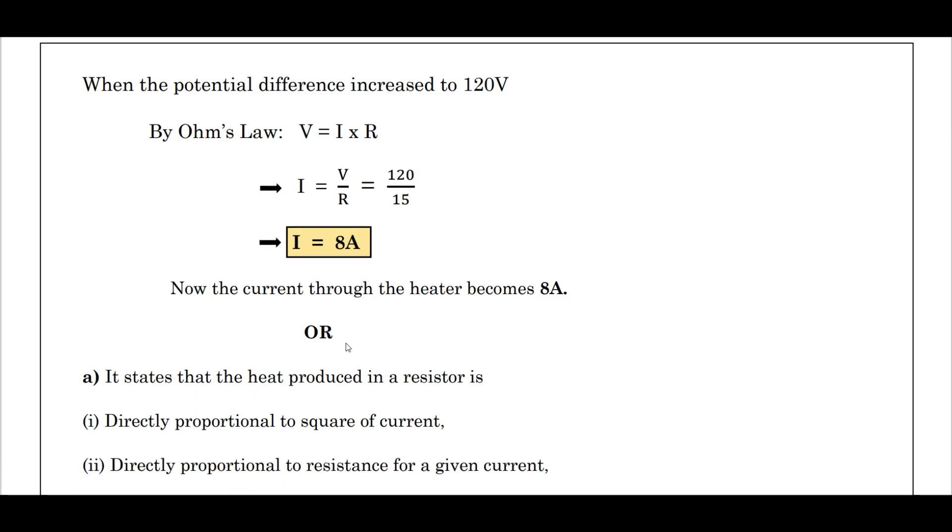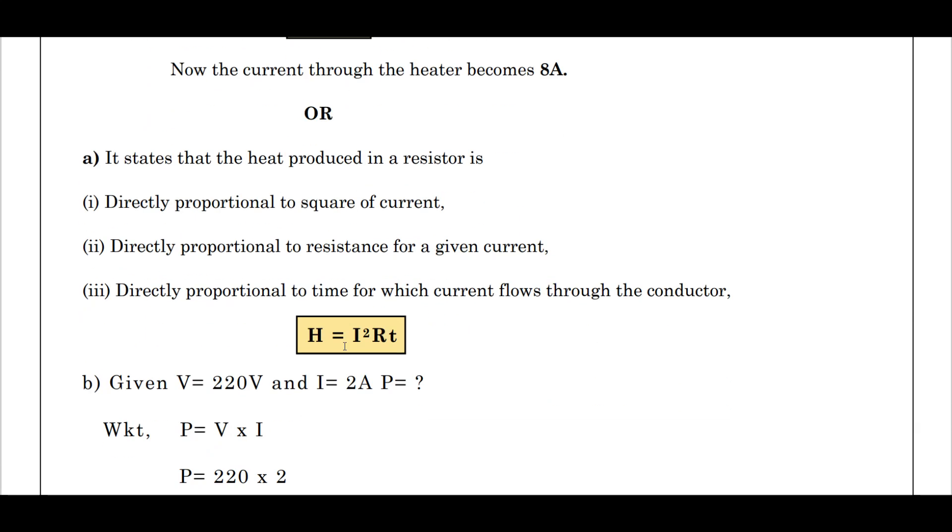Next question: state Joule's law of heating. It states that the heat produced in a resistor is directly proportional to the square of the current, directly proportional to the resistance for given current, directly proportional to time for which the current flows through the conductor. H = I²Rt.